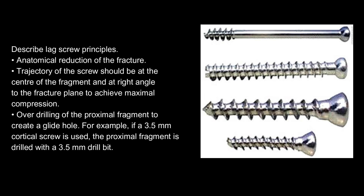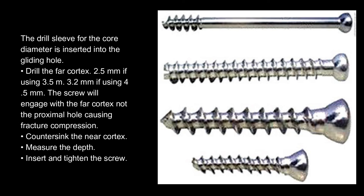For example, if a 3.5 mm cortical screw is used, the proximal fragment is drilled with a 3.5 mm drill bit. The drill sleeve for the core diameter is inserted into the gliding hole. Drill the far cortex: 2.5 mm if using 3.5 mm, or 3.2 mm if using 4.5 mm. The screw will engage with the far cortex, not the proximal hole, causing fracture compression.